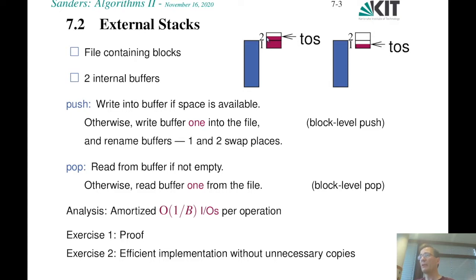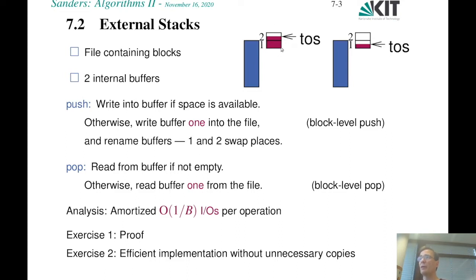We could copy the data back, but that causes a lot of internal work. Instead, we swap the identity of the blocks. That's one of the things in algorithm engineering for external memory algorithms: you have to be very careful about copying around a lot of data, because that can also be a bottleneck. As an exercise, think about whether you could implement the stack data structure with a single buffer block, or what may go wrong.